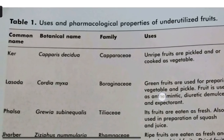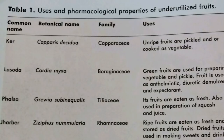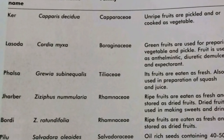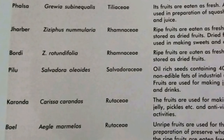In JRF and SRF ICAR examinations, scientific names and families of minor fruits are frequently asked. Kerr: Capparis decidua, family Capparidaceae. Lasoda: Cordia myxa, family Boraginaceae. Falsa: Grewia asiatica, family Tiliaceae. Jhar Ber (rootstock of cultivated Ber): Ziziphus nummularia, family Rhamnaceae. Baldi (wild variety of Ber): Ziziphus rotundifolia. Pillu: Salvadora oleoides.